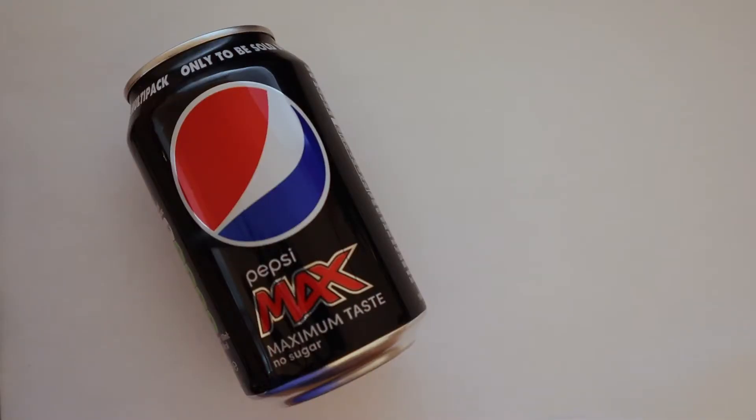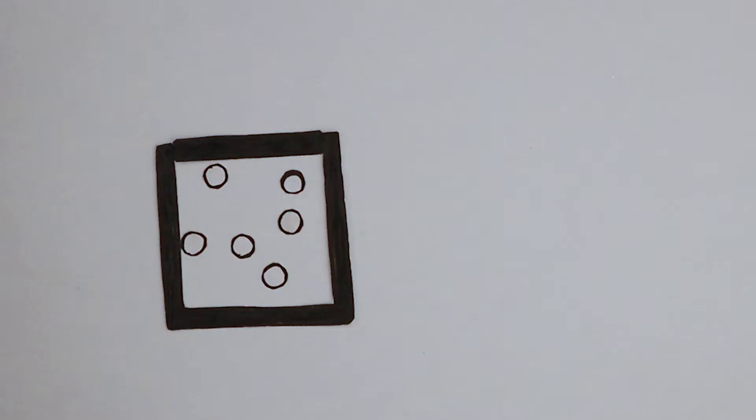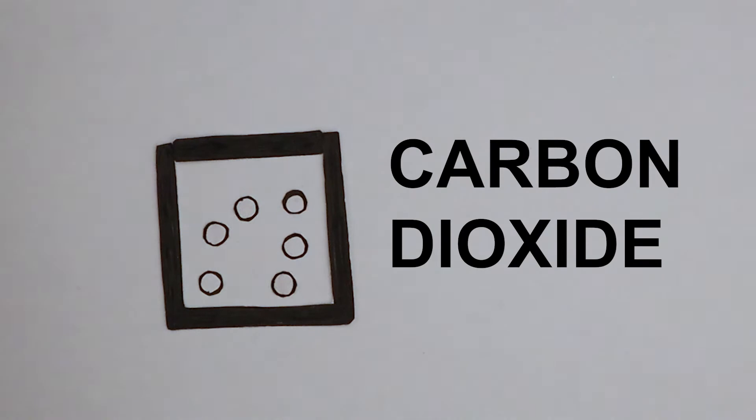A typical can of Pepsi has a pressure of 40 PSI, which is equivalent to 276 kilopascals. What causes this pressure inside of the can? Carbon dioxide is dissolved into soda to provide the bubbles and fizz.